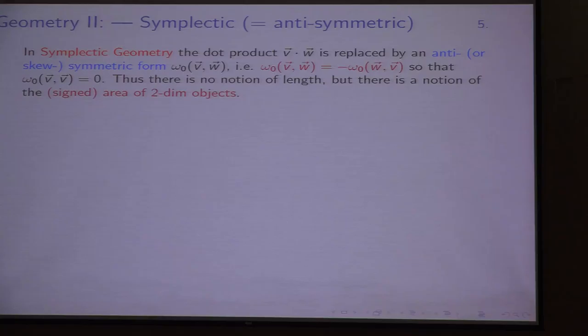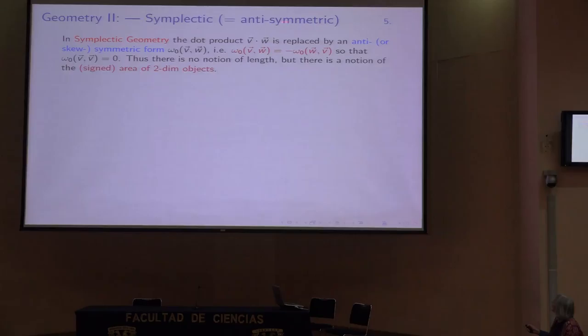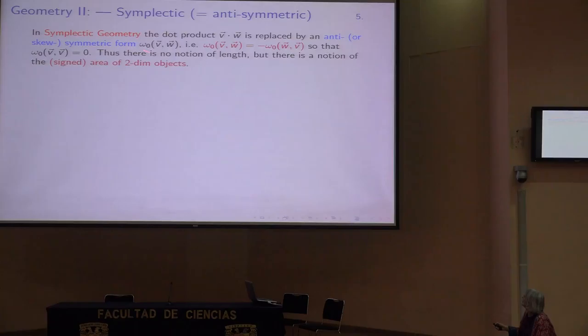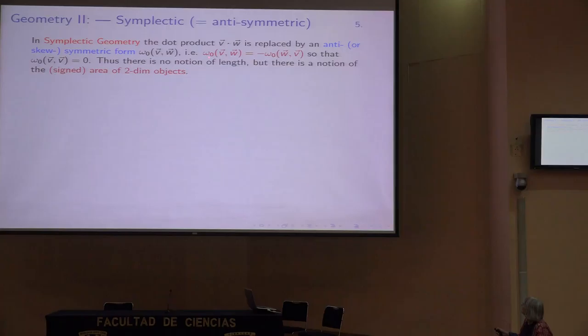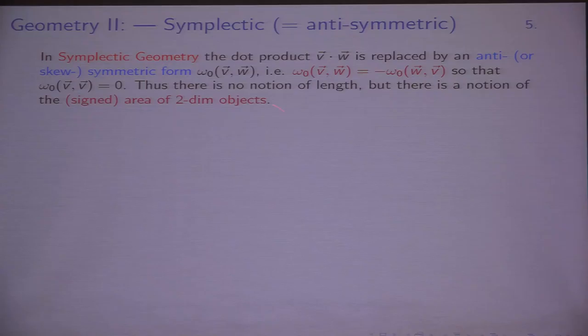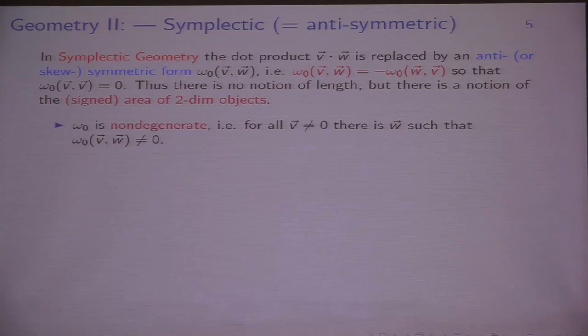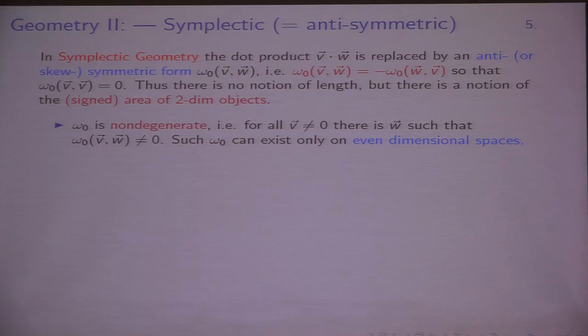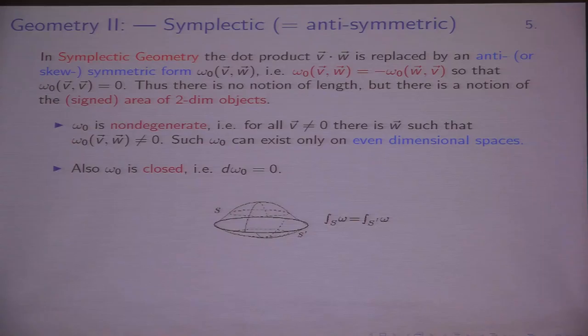In symplectic geometry, you have a very similar structure, but instead of using the dot product, you replace it by an anti-symmetric form, which I write as ω₀(V,W). It's anti-symmetric, so the order does matter: ω₀(V,W) = −ω₀(W,V). That means that ω₀(V,V) is always zero, so there's no analog of length — a single vector gives no measurement. What you do get, if you have two different directions, is something you can think of as a signed area. The form is non-degenerate: for any non-zero vector, you can always find a W which pairs non-trivially with it. And you can only have non-degeneracy on an even-dimensional space — that's why it's an even-dimensional geometry.